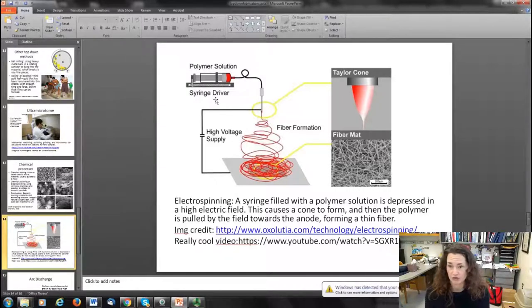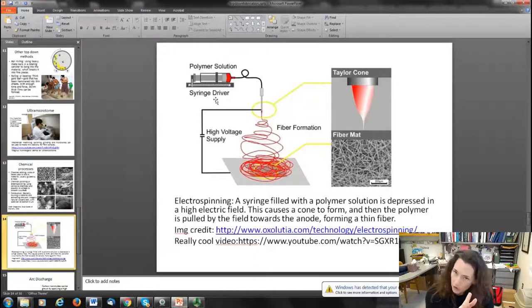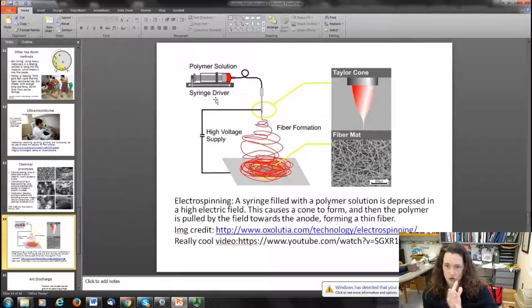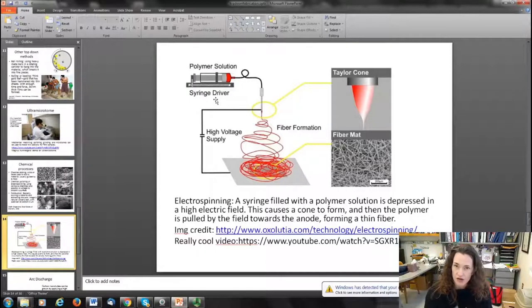At the very tip of the cone, the radius is really tiny, on the order of maybe tens of nanometers or less. If the electric field is strong, that can actually pull a fiber out of that Taylor cone. If you keep a constant depression in your syringe and keep an electric field on it, then you can extract fibers.